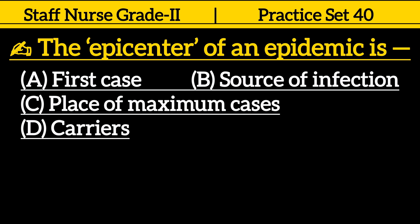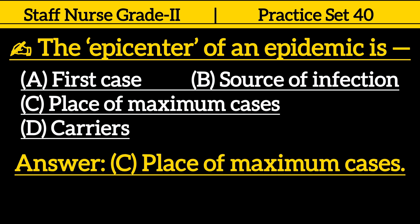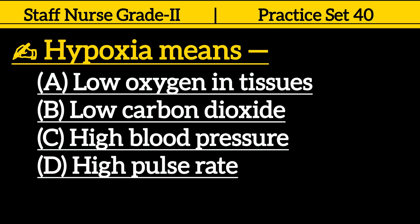The epicenter of an epidemic is: Option A. First case. Option B. Source of infection. Option C. Focus of maximum cases. Option D. Carriers. Correct answer is Option C. Focus of maximum cases.